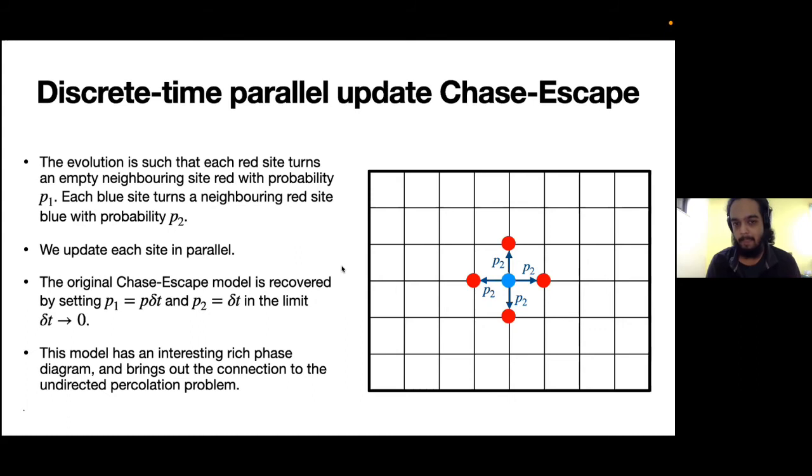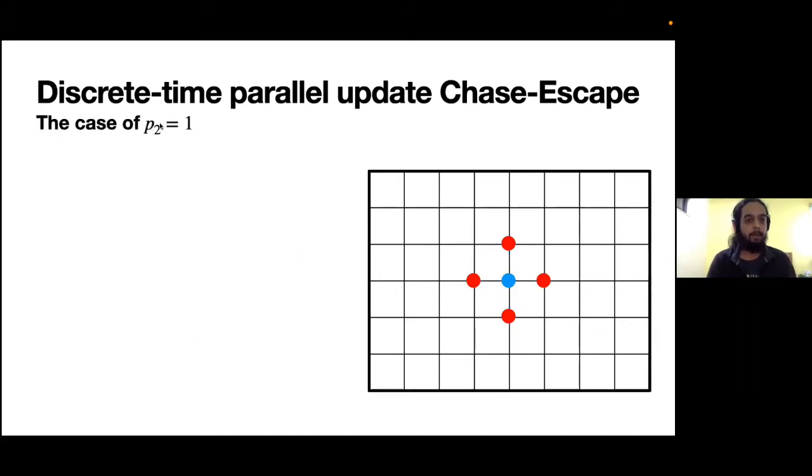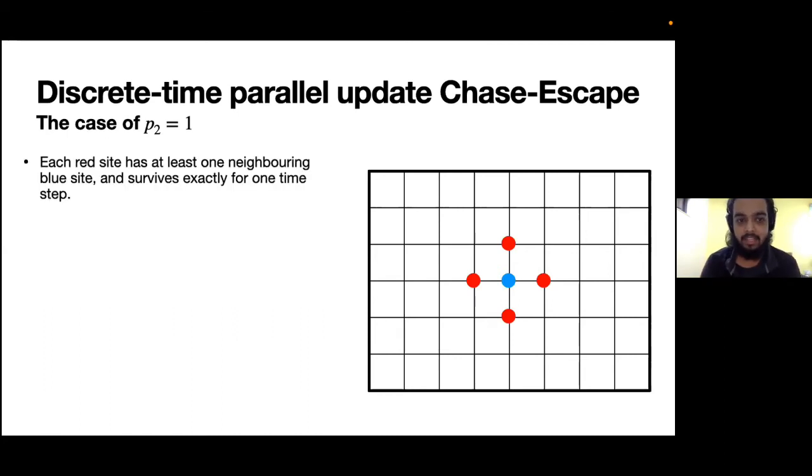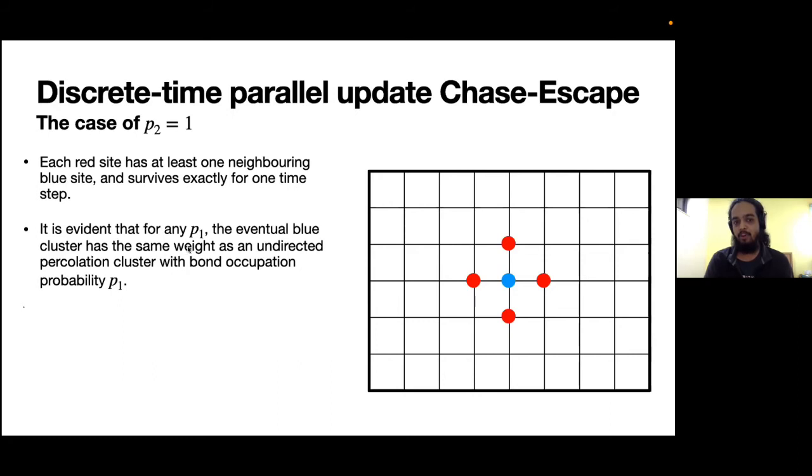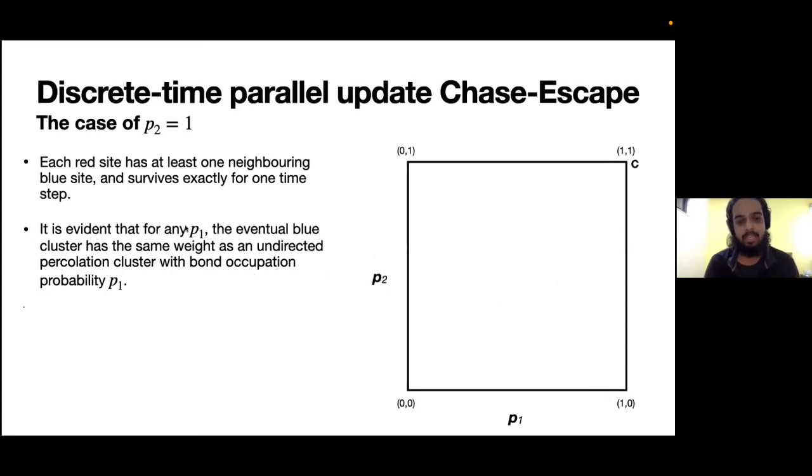This two-parameter Chase-Escape with parallel updates has a very rich phase diagram and brings out the connection to the undirected percolation problem. If we consider the case of p2 equal to 1, which refers to the case where predator definitely eats its neighboring prey in one time step, each prey has at least one neighboring blue site always and survives exactly for one time step. You can argue that for any p1, the eventual blue cluster will have the same weight as an undirected percolation cluster with bond occupation probability p1.